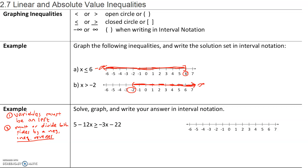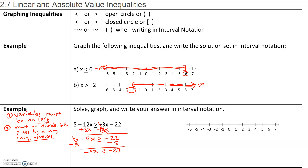Step one is to clear any fractions, which we don't have. Step two is to distribute, which we don't have. Step three: move all variables to the left side — since it's an inequality, variables must be on the left. So we add 3x to both sides, giving us negative 9x greater than or equal to negative 22. We subtract 5 from each side to get negative 9x greater than or equal to negative 27. Then we divide by negative 9 — since we're dividing by a negative, the inequality reverses — and our solution is x less than or equal to 9.